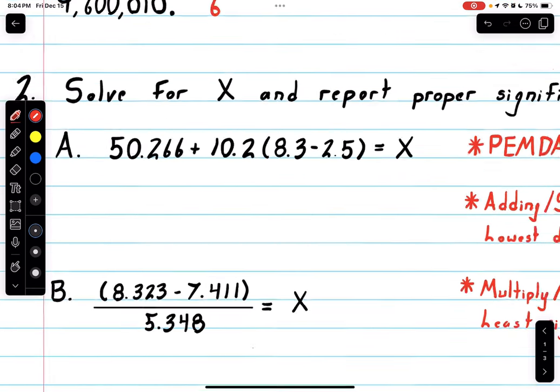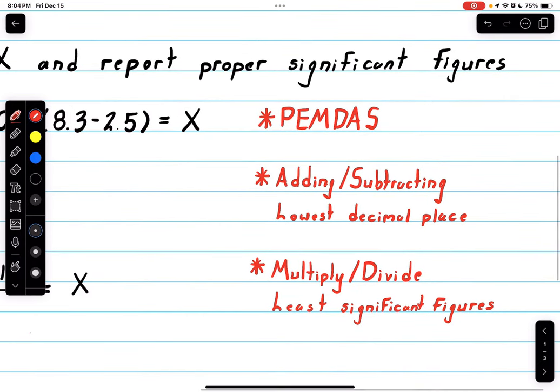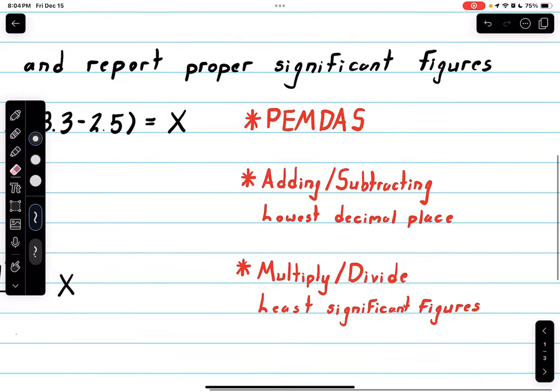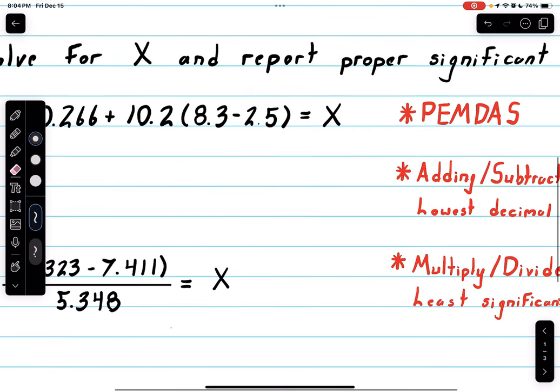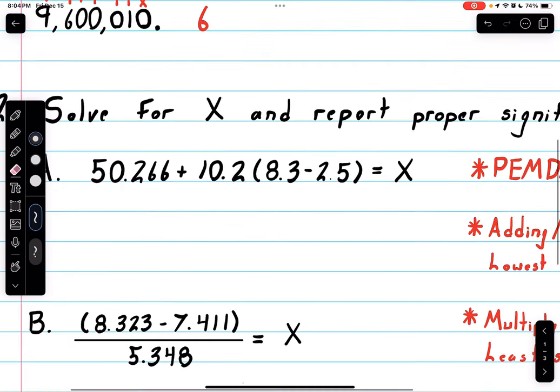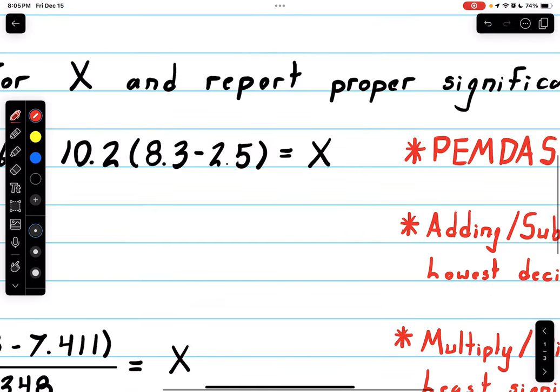Moving on to the next one, this is going over more sig figs, which is PEMDAS. I've included a little key. With adding/subtracting, you want to go to the lowest decimal place. With multiplying and dividing, you want the least amount of sig figs given. Starting with the first one, it's quite simple. Let's start with the parentheses: 8.3 - 2.5 = 5.8. With adding/subtracting we go to the lowest decimal place, which is the tenth place, so 5.8 stays.